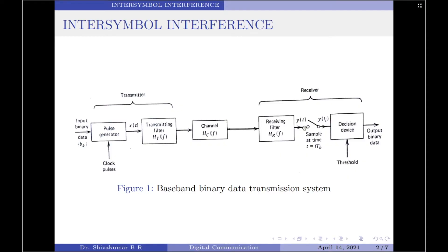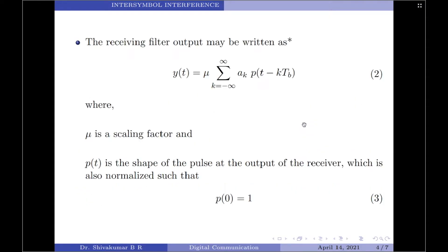Let us now write an equation for the output of the receiving filter, y(t): y(t) = mu times summation over k from minus infinity to plus infinity of AK times p(t minus k*TB), where mu is a scaling factor and p(t) is the shape of the pulse at the output of the receiver, normalized such that p(0) equals 1. Note that the normalization of p(t) at t=0 means the total area under the curve of P(f) equals unity.